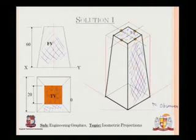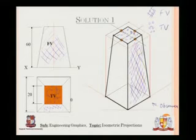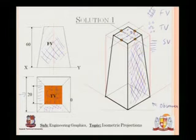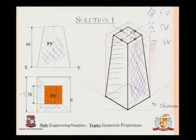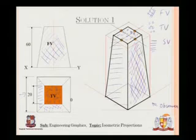The checks signify the front view and the circles signify the top view. Now I want my side view, in which I will have these lines. If I am looking from this side, then this face which I have is actually this face available to me. As you can see, all three dimensions are visible to me. So I can say that this is the solution for my isometric problem.